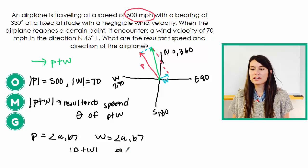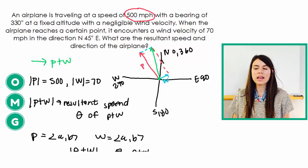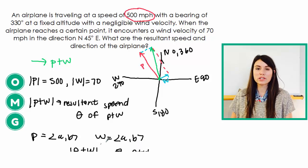Find the magnitude of that new vector that we've created. And then we need to find theta for P plus W. And again, finding magnitude and finding theta, that's all in those previous videos, the ones I said to watch first, so that you'll know how to do that.